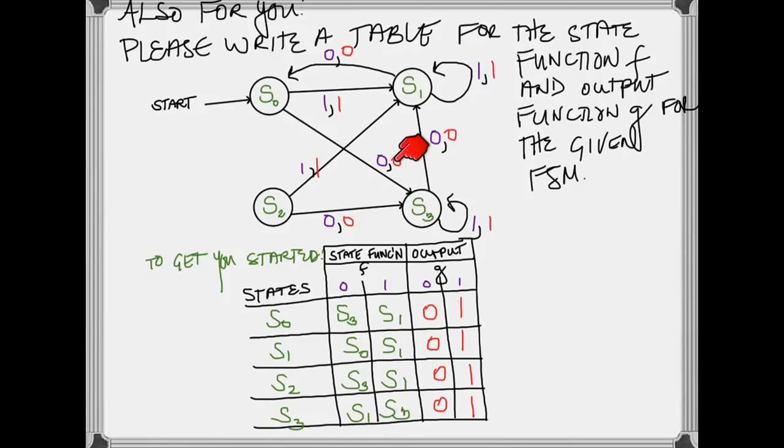What else can we check? S0 with an input of 1 gets transitioned to S1. So S0 with an input of 1 gets transitioned to S1. And the output given in red above is also 1, which is why we have an output of 1 here.